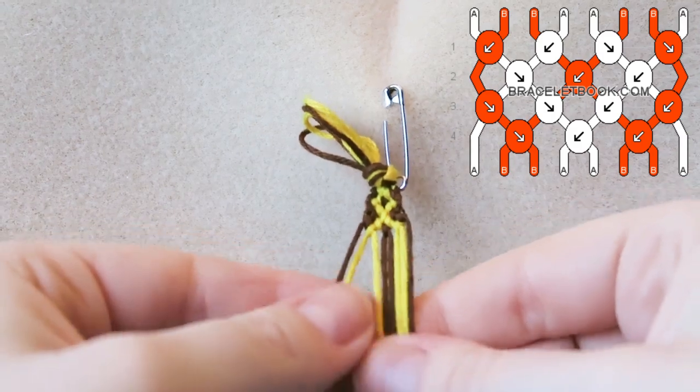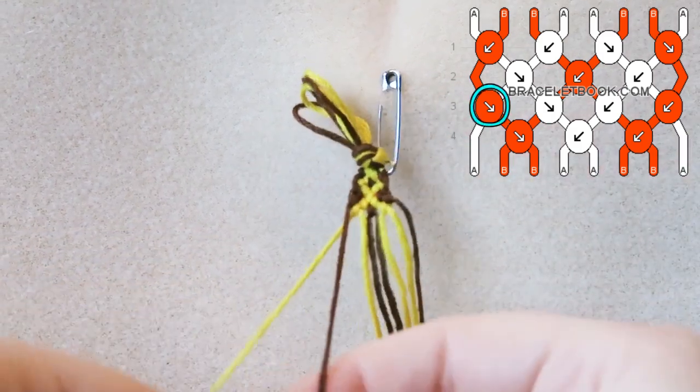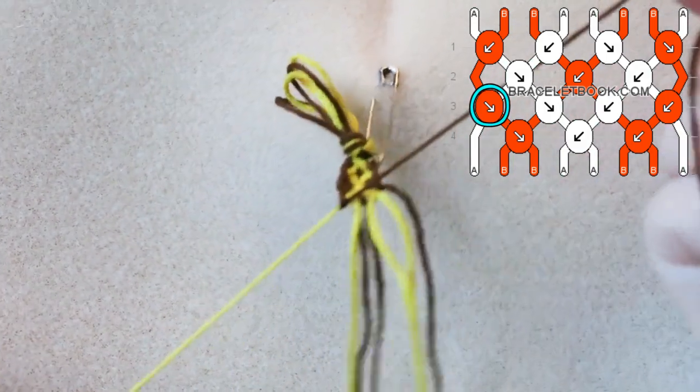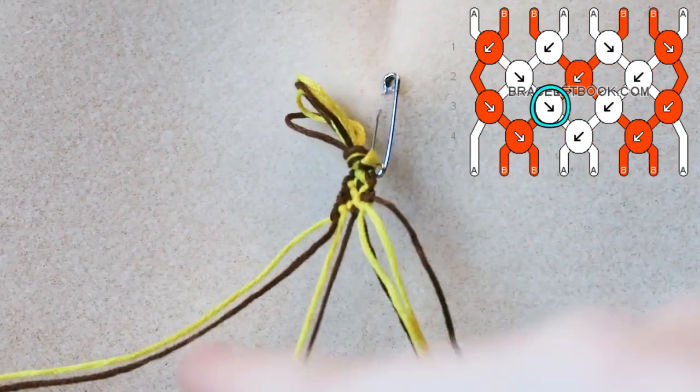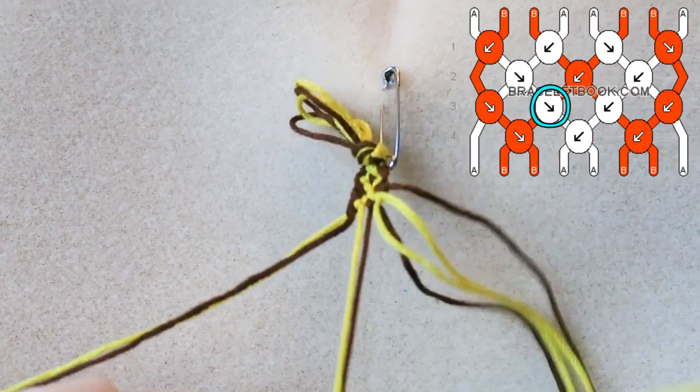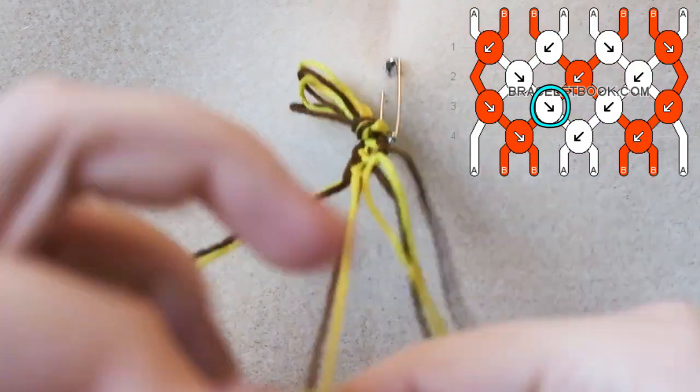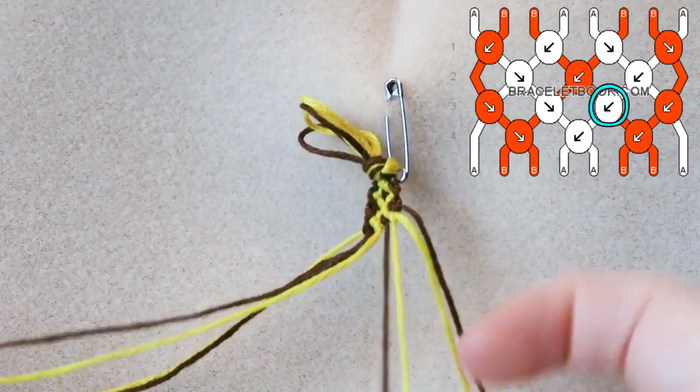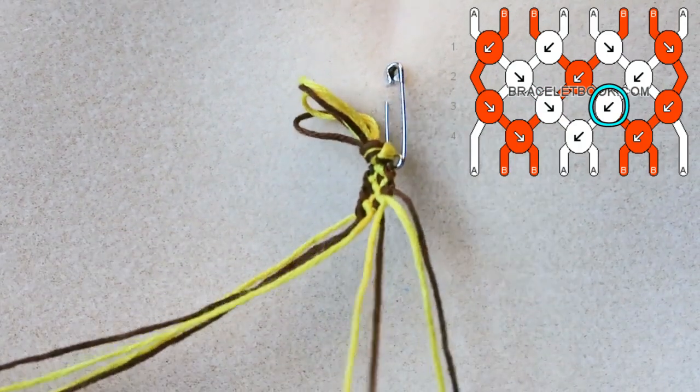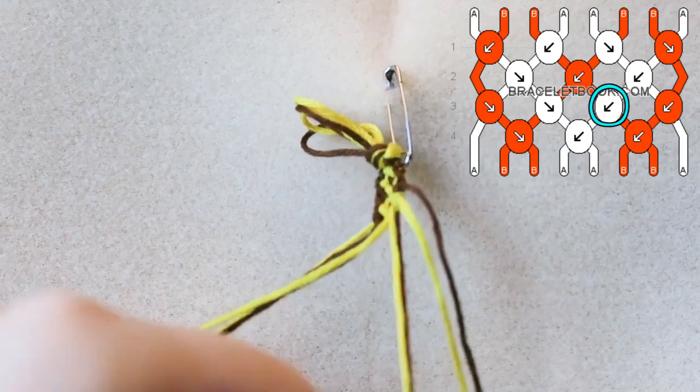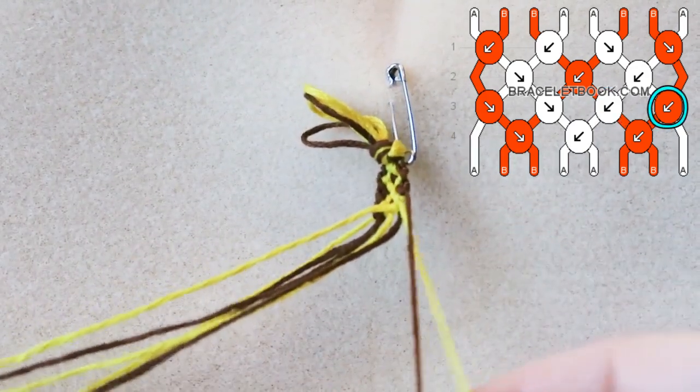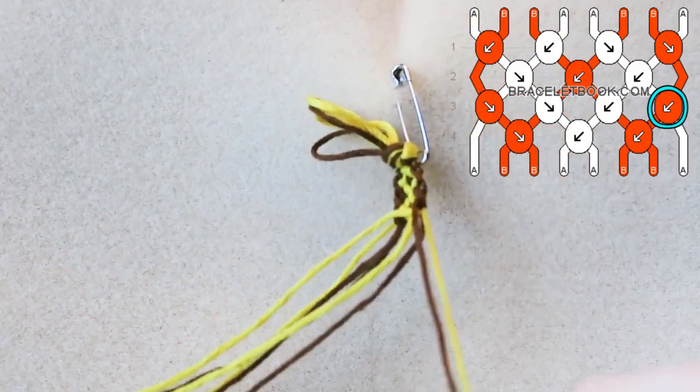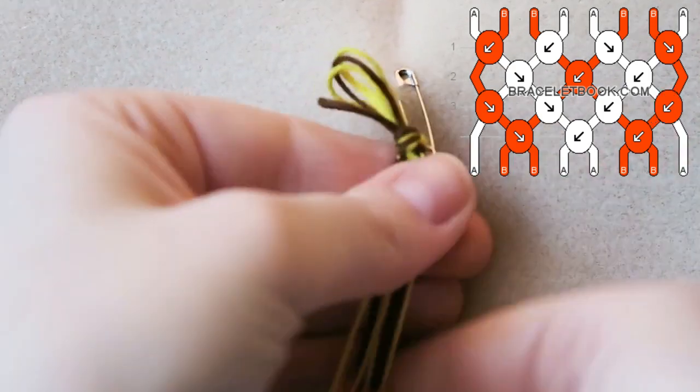Now we are going on to the third row. We are going to knot the brown over the yellow. Then we are going to knot the yellow over the brown in a forwards knot. Move them to the side, and then in our next pairing, we're going to knot this yellow over the brown in a backwards knot. Finally, we are going to knot this brown in a backwards knot over the yellow.